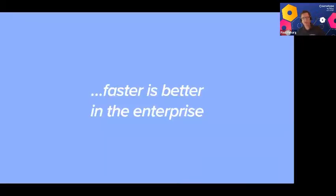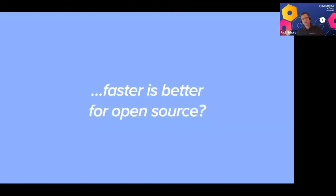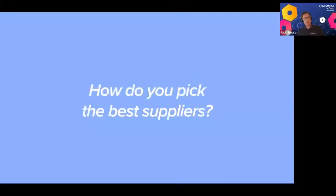How do you make sure you're using the right components? The State of the DevOps Report and DORA have shown that faster is better in the enterprise — deploying faster means creating new versions and operating more quickly. But is faster better for open source? And if so, how do we make sure we pick the best suppliers?